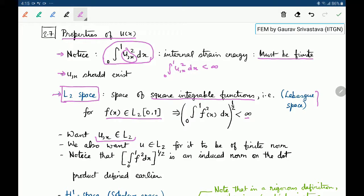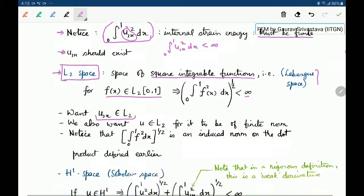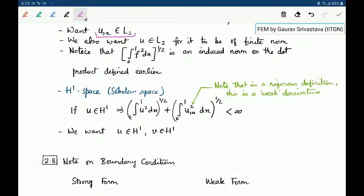We want u(x) to lie in L2 because here u_x is being integrated. We also want u to be in L2. If the function u does not behave properly, only its derivative behaving properly will also be a problem. As a side note, you may notice that this particular quantity is an induced norm on the dot product which we have defined earlier. If you don't know what is an induced norm, don't worry about it. We will come to it later.